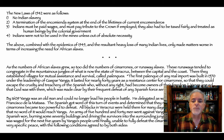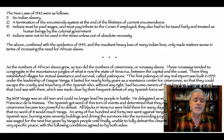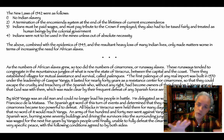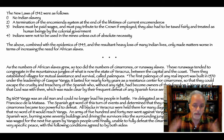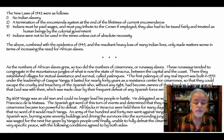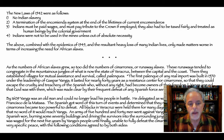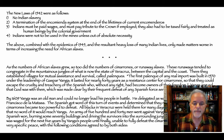Combined with the epidemics of 1545 and heavy loss of Indian lives, the New Laws only increased the need for African slaves. As the number of African slaves grew, so too did the numbers of Cimarrones — runaway slaves. These runaways tended to congregate in the mountainous jungles of what is now the state of Veracruz, between the capital and the coast. The first palenque of real importance was built in 1570 under the leadership of Gaspar Yanga, lasting nearly 40 years as a resistance center.